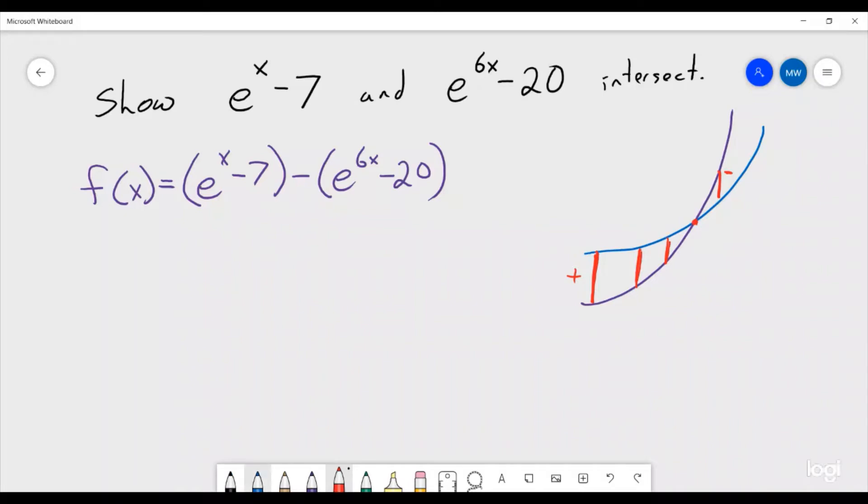So let's rewrite what f(x) is a little bit more clearly. This is f(x) equals e^x minus e^(6x) minus 7 plus 20, so plus 13.